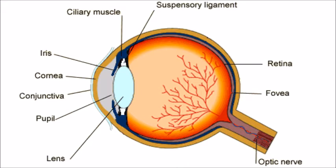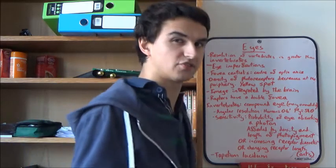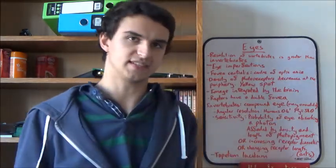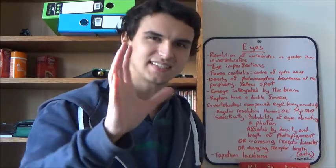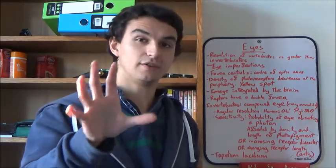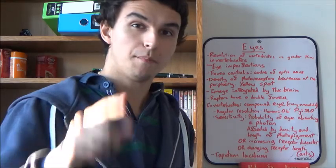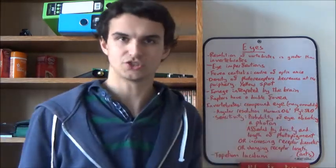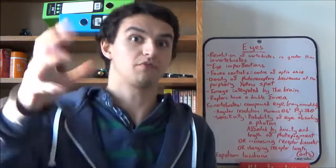So that means the fovea centralis isn't that good at night vision, for example, because that contains all the cone receptors. For night vision you really want rods, so you're able to just detect light. The overall density of the photoreceptors also decreases as you move away from the fovea centralis. It's something like 160,000 photoreceptive cells per square millimeter in the fovea centralis, becoming much less as you move further away towards the periphery.